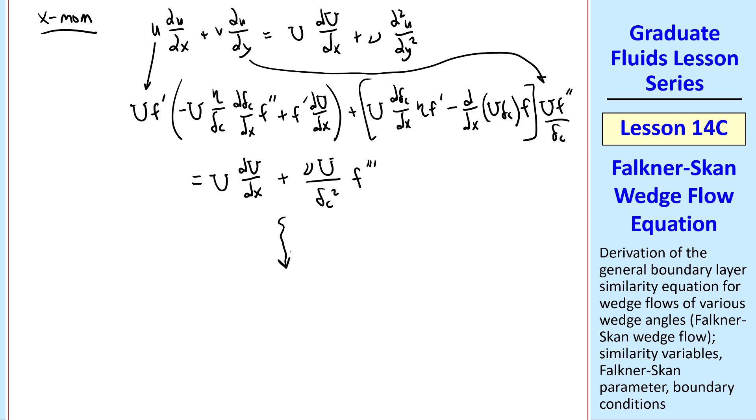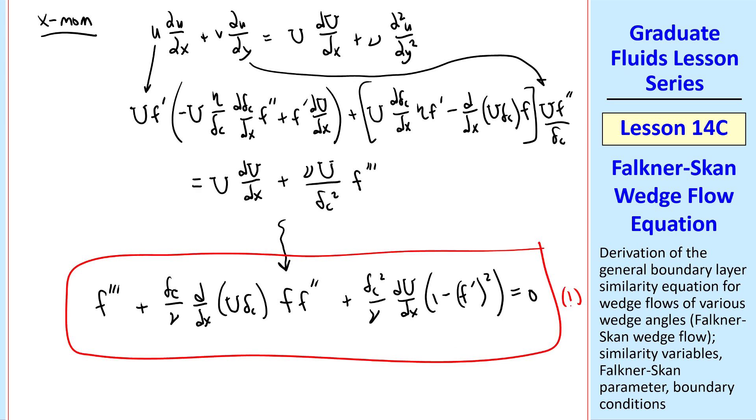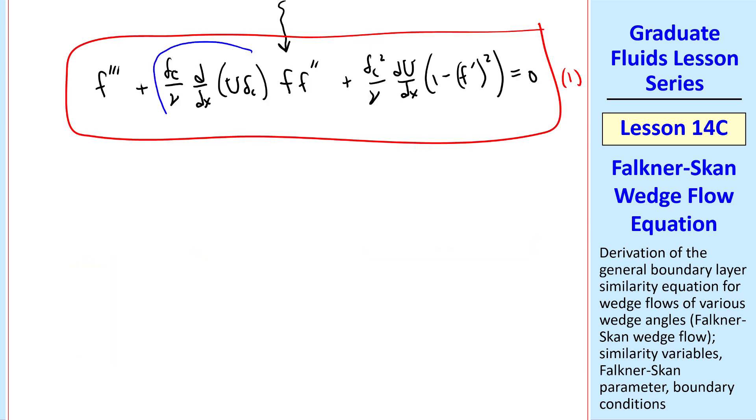I won't bore you with all the algebra, but if you multiply this all out, you'll find that this term and this term cancel out. So we get f triple prime plus delta c over nu d dx of U delta c ff double prime plus delta c squared over nu du dx 1 minus f prime squared equals 0. And we'll call this equation 1. Let's also call this grouping of terms alpha and this grouping of terms beta.